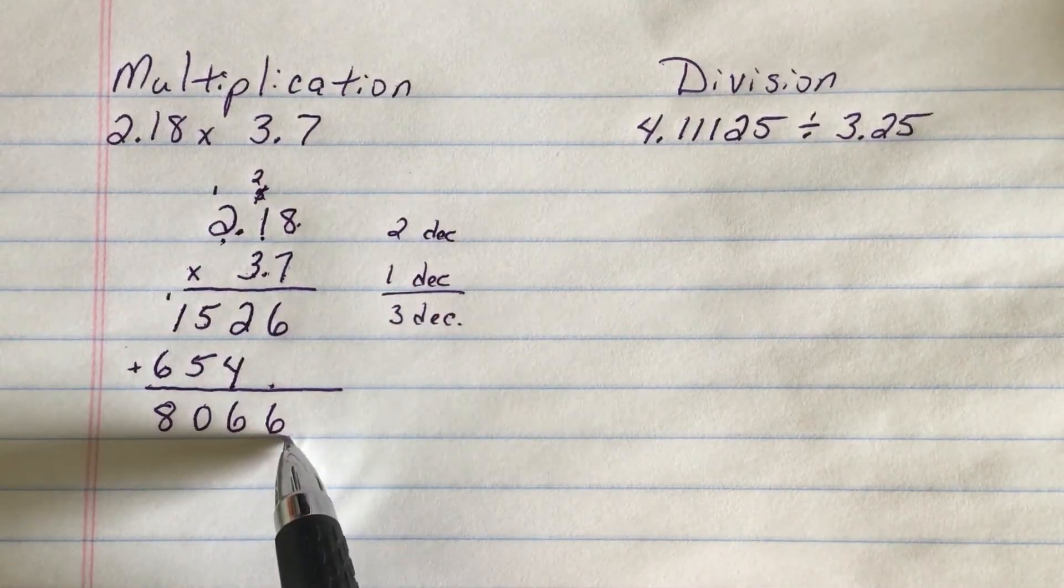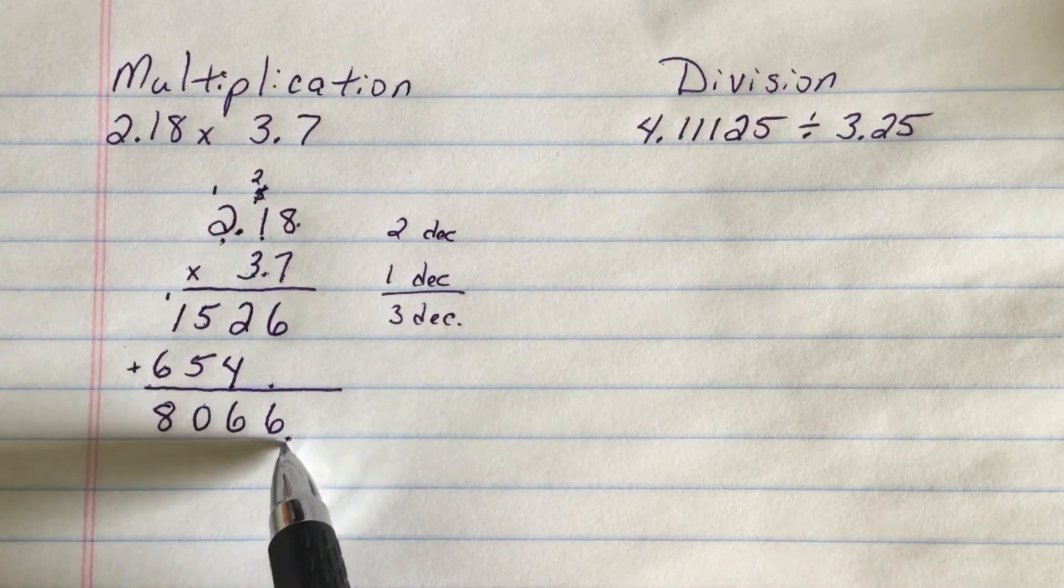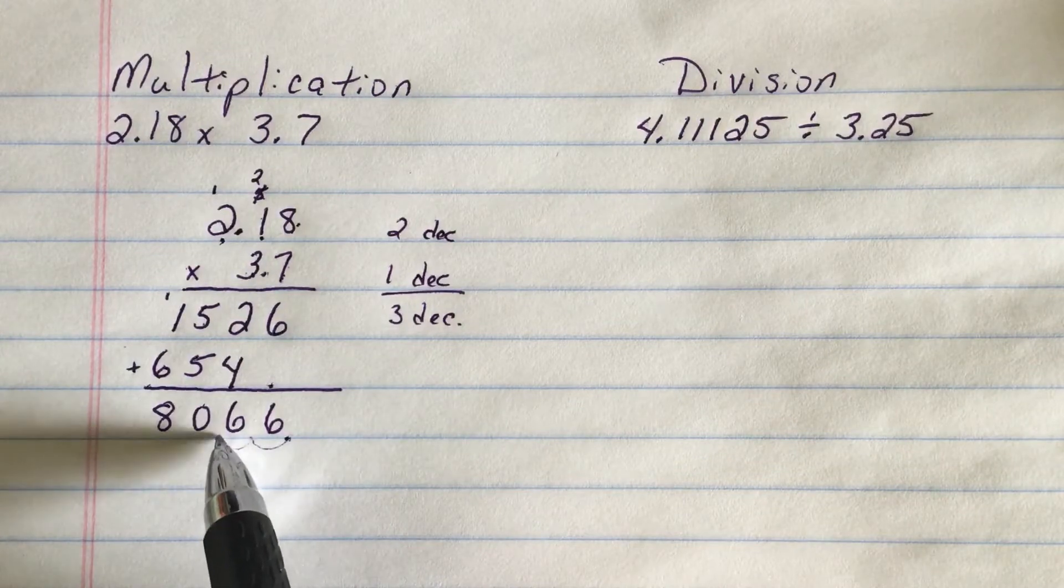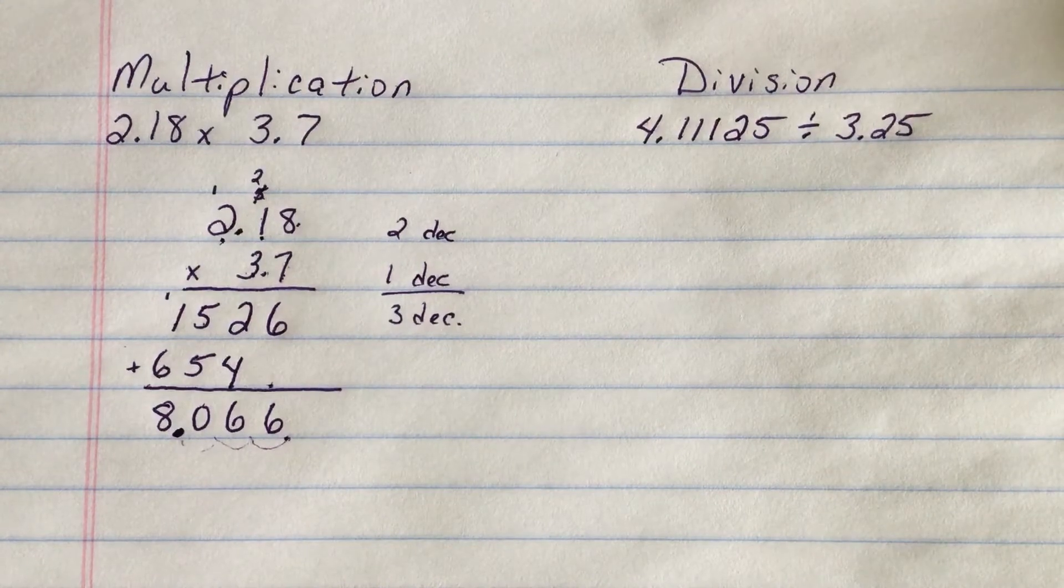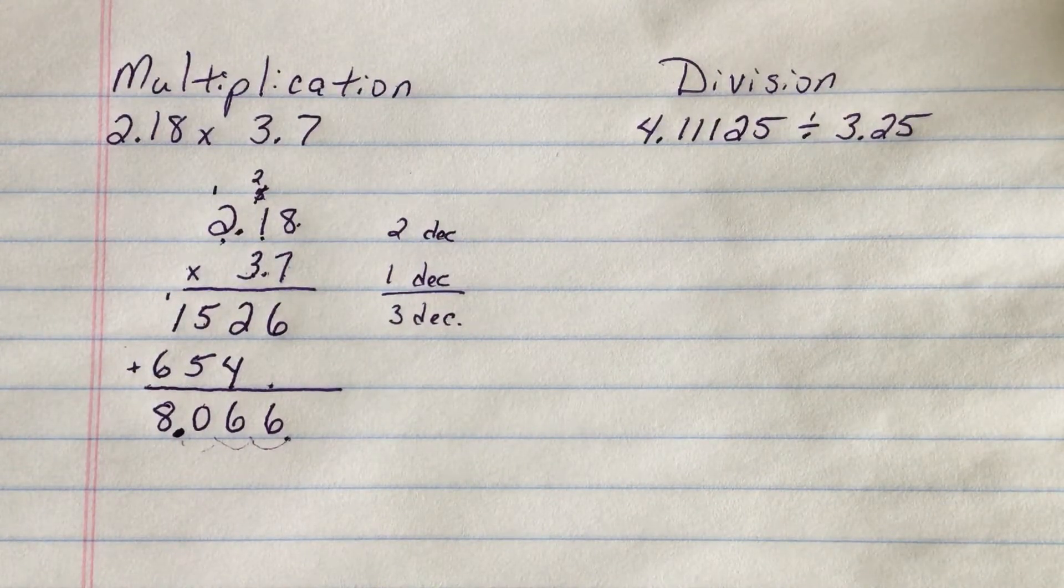I'm going to count from the right side and move it in three places. So that's one, two, three. So 2.18 times 3.7 is 8.066. That's multiplication.